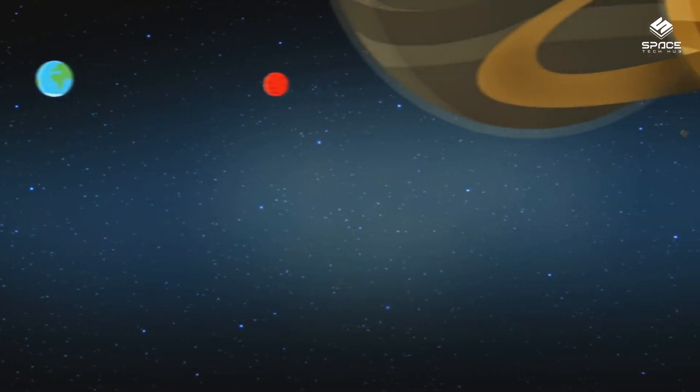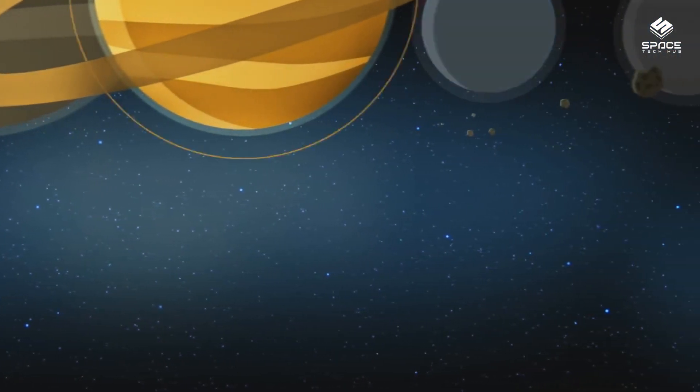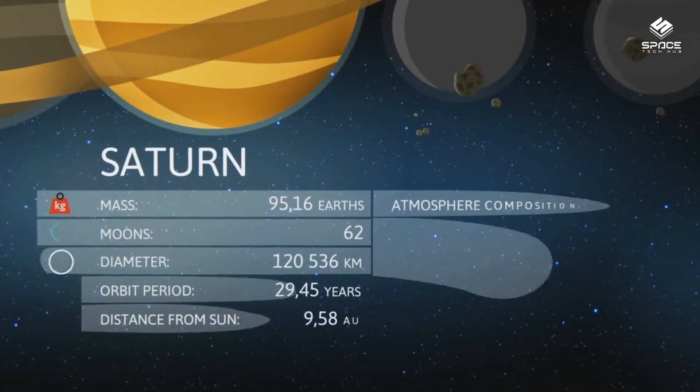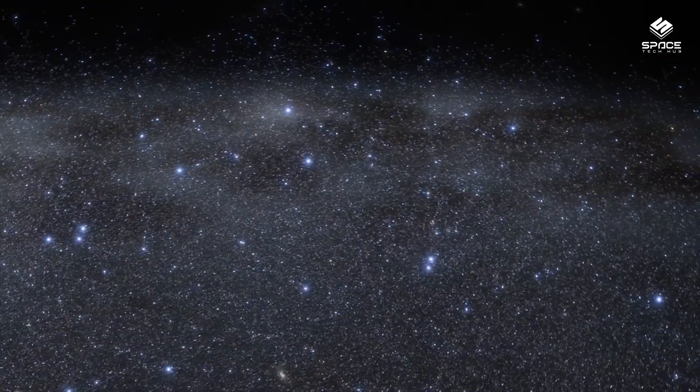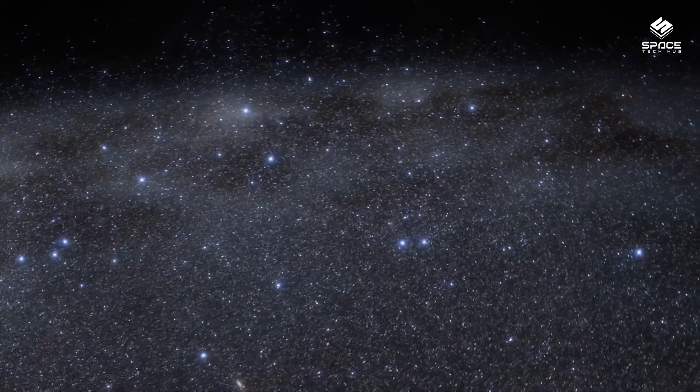Planetary alignments are not very common because each planet orbits the Sun at a different speed and distance. For example, Mercury takes only 88 days to complete one orbit, while Neptune takes 165 years. So it's very rare for all of them to be in the same position at the same time.